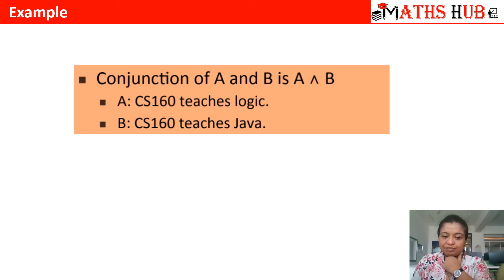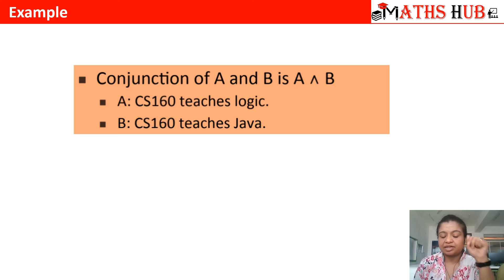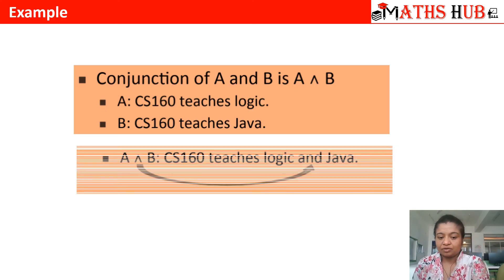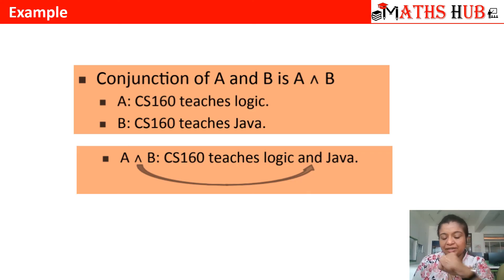Let us take one more example. Proposition a is 'CS160 teaches logic' and proposition b is 'CS160 teaches Java.' What is the conjunction of a and b? The answer is: 'CS160 teaches logic and Java' — we connect the two statements with the and operator.